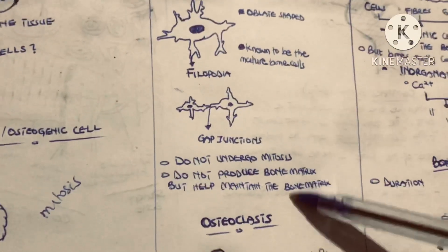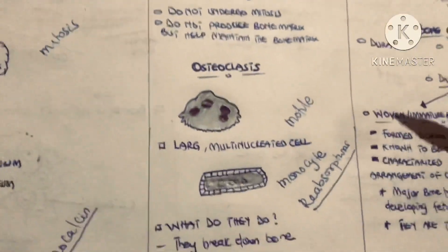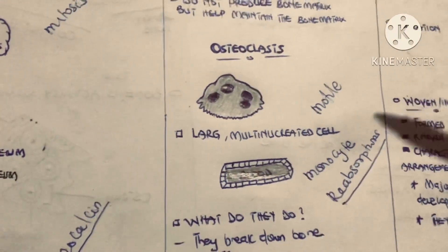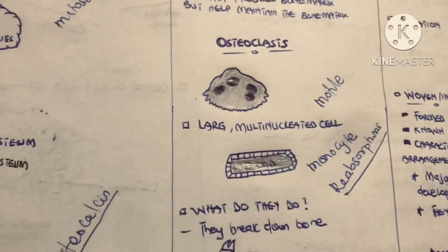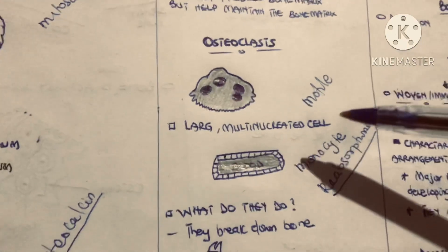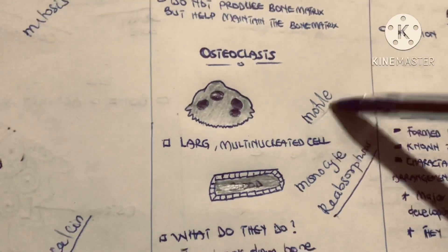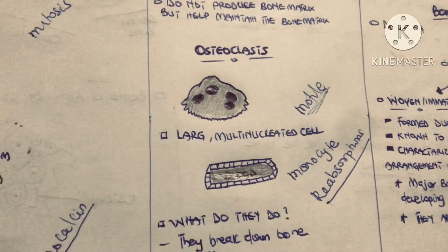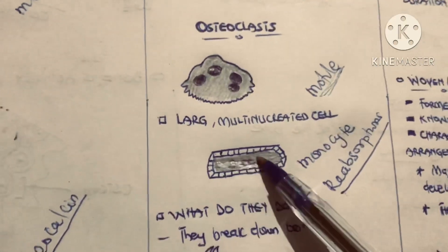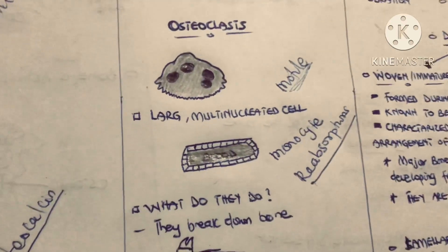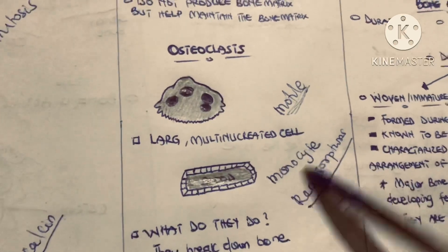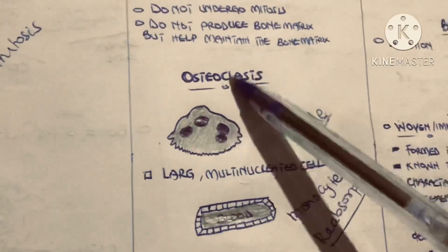Osteocytes do not produce the bone matrix, but they help maintain it. We also have another type of bone cell called the osteoclast. This osteoclast is large and multi-nucleated, unlike the other cells which are mononucleated. It is also motile — it can move. It originates from a special type of white blood cell called monocytes; during bone formation, monocytes differentiate into osteoclasts.